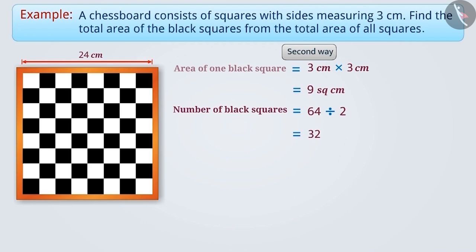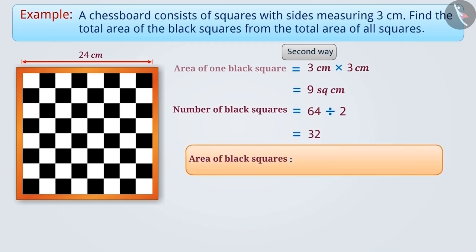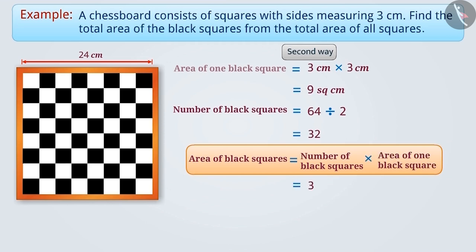The area of black squares is equal to the number of black squares multiplied by the area of 1 black square, which is 32 multiplied by 9 cm², equal to 288 cm².